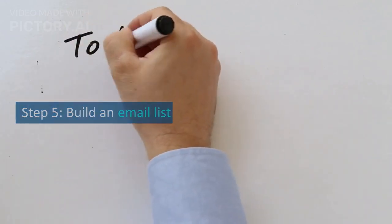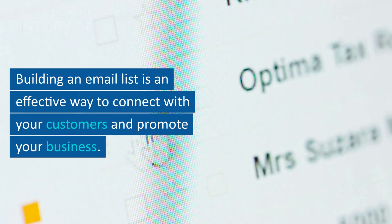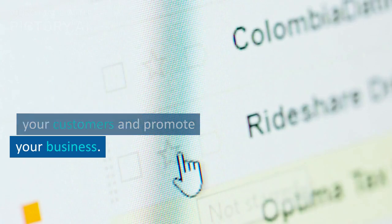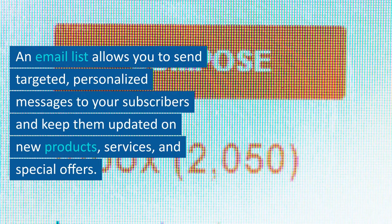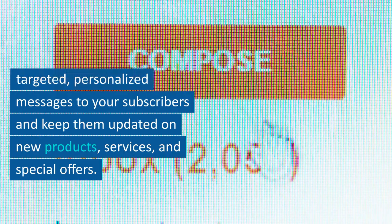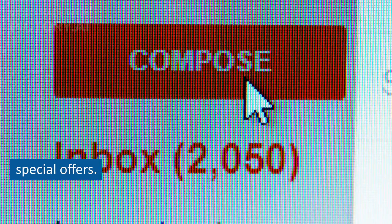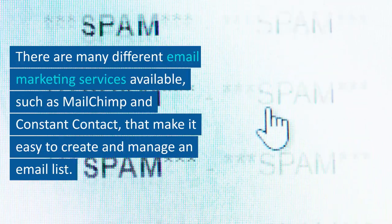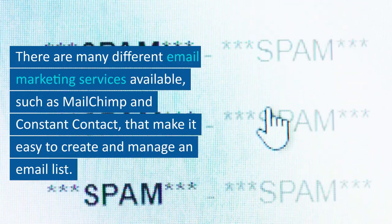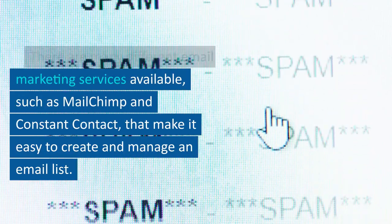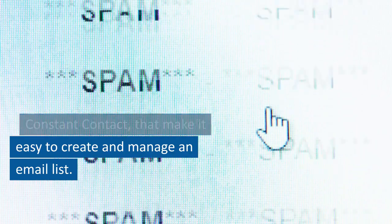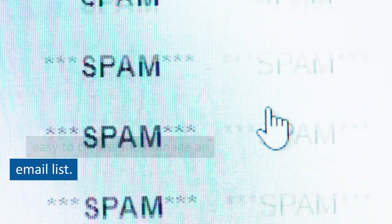Step 5: Build an email list. Building an email list is an effective way to connect with your customers and promote your business. An email list allows you to send targeted, personalized messages to your subscribers and keep them updated on new products, services, and special offers. There are many email marketing services available, such as MailChimp and Constant Contact, that make it easy to create and manage an email list.